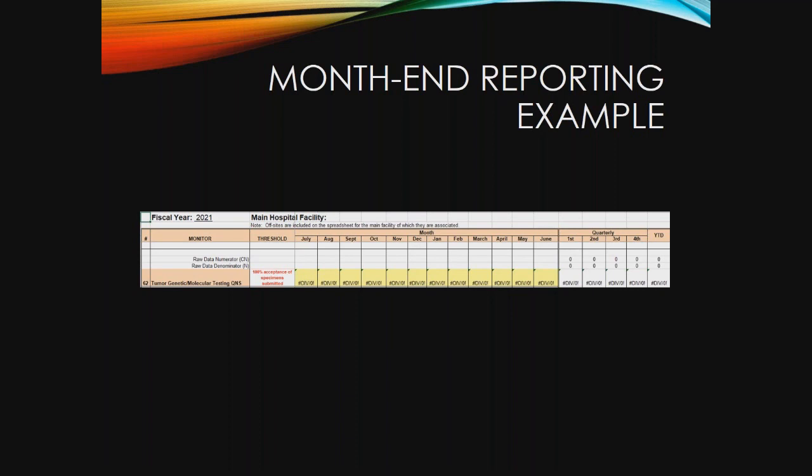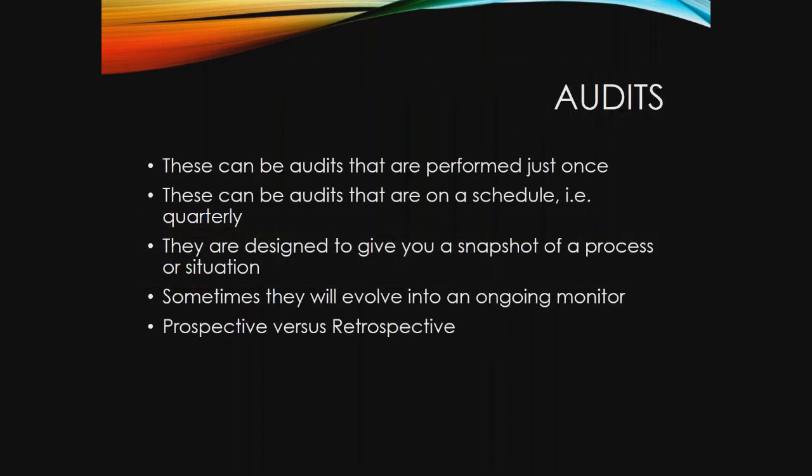Each month all the quality monitors for the department are entered into the spreadsheet and then used to discuss at lab management meetings and lab quality committee meetings. Each monitor has an area for raw data to be entered, with compliance automatically tabulated by a formula each month, rolling up quarterly and then year to date. Also built into the spreadsheet are graphical tools that can be printed when a picture tells the story better than the raw data, and many times this is what our leadership team will post so that staff are familiar with where they were for the particular month.